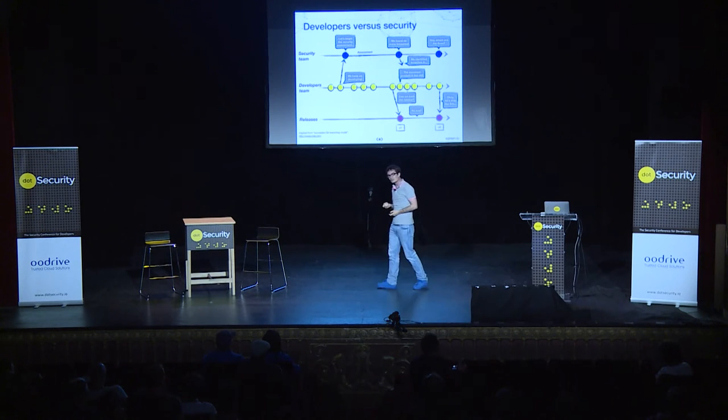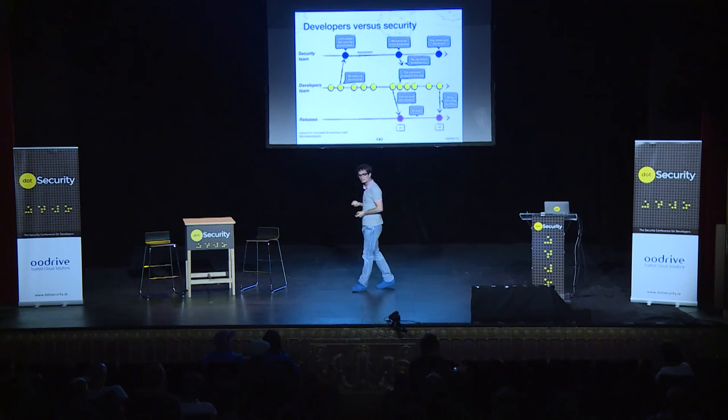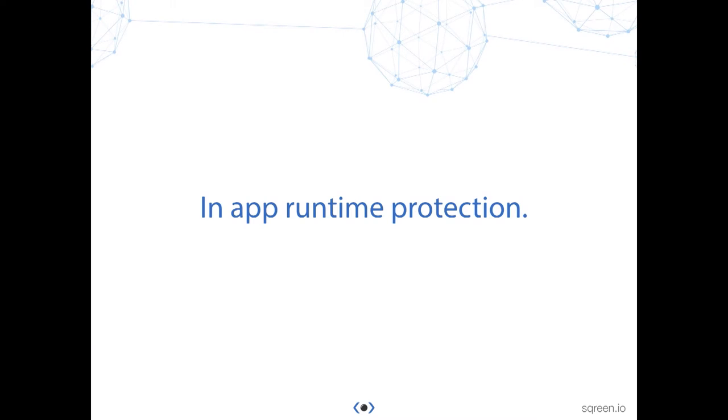So the question is: how can we reduce this delay between the protection and the code? The answer is in application runtime protection.